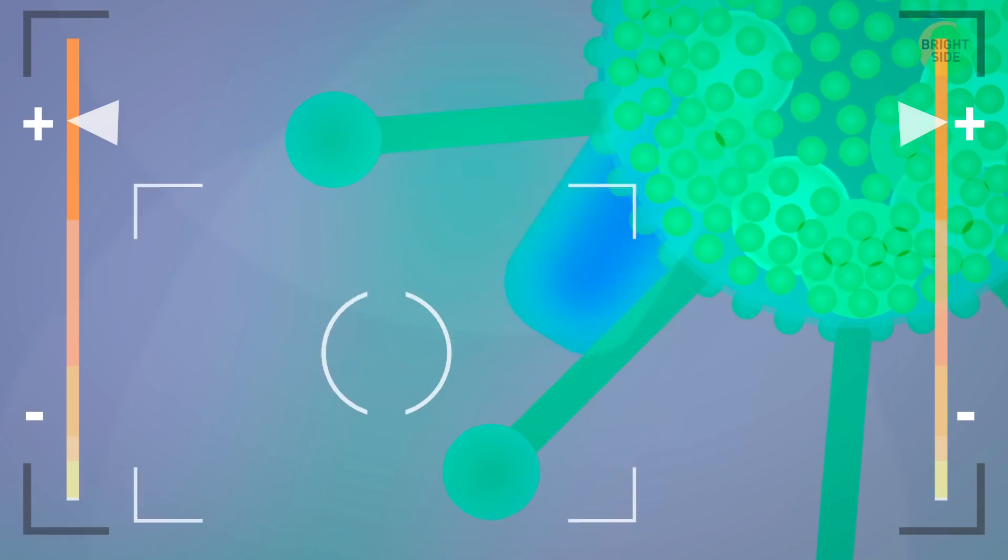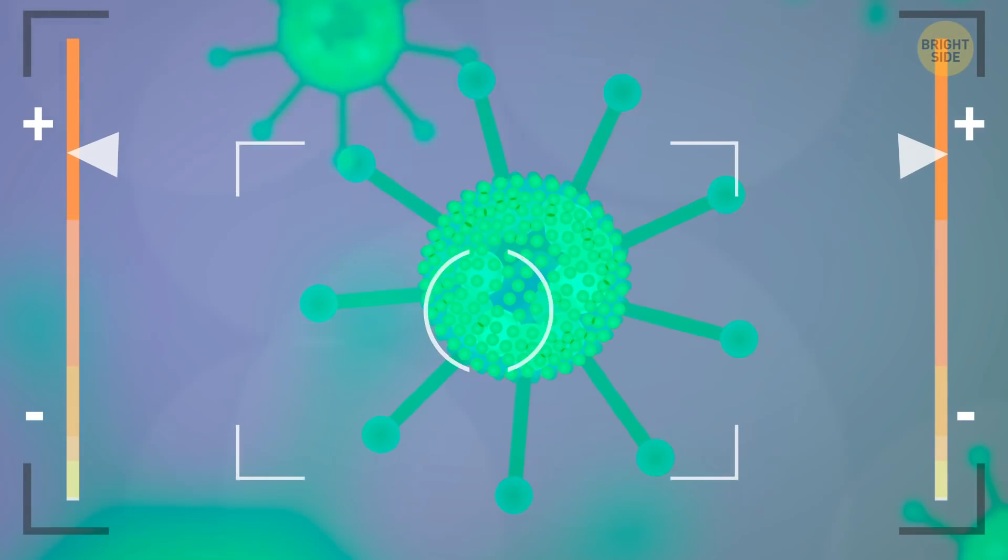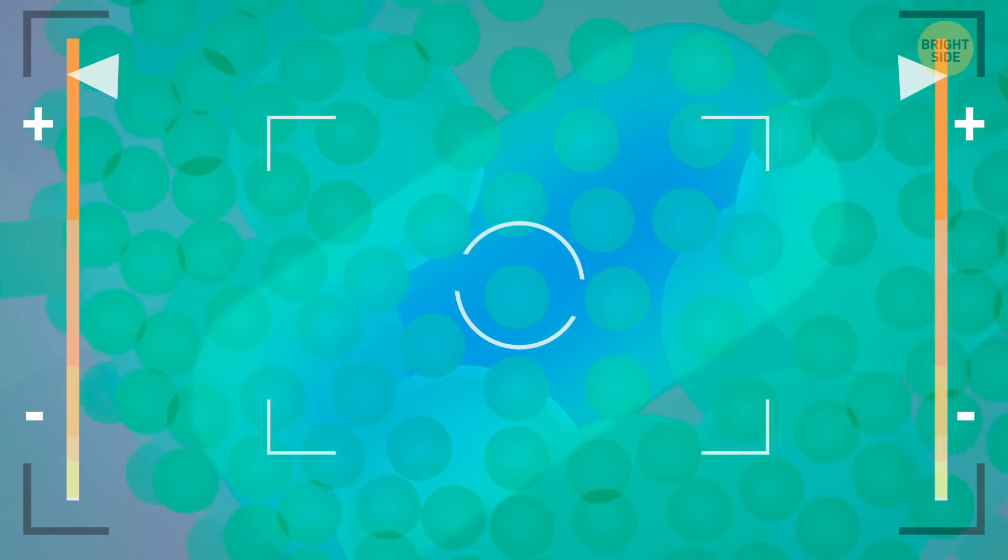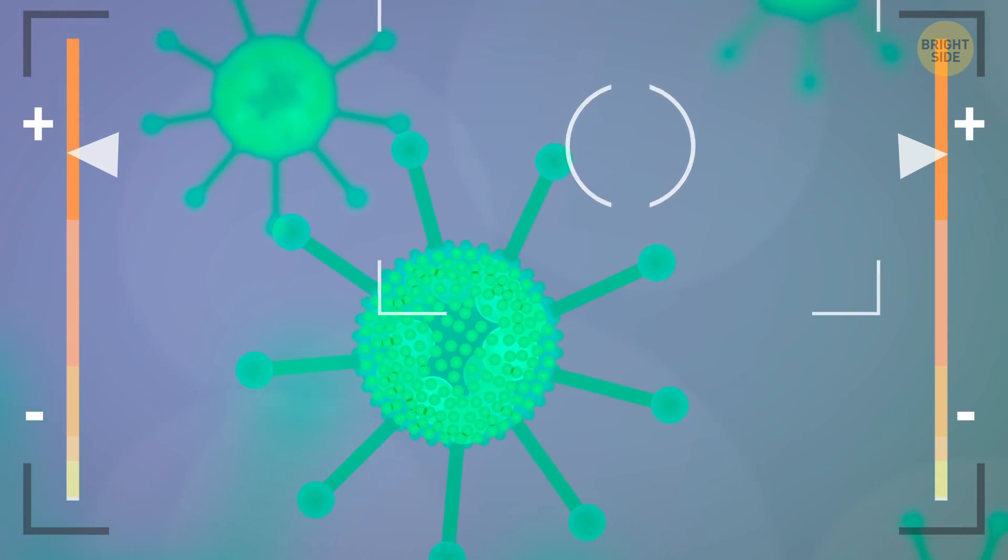This little guy looks like a tiny robot spider of sorts, don't you think? At the same time, bacteriophages are the smallest things you can see through an optical microscope, so everything else we've got today can only be observed with an electron one.